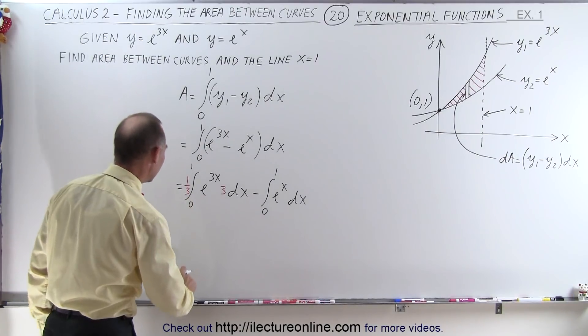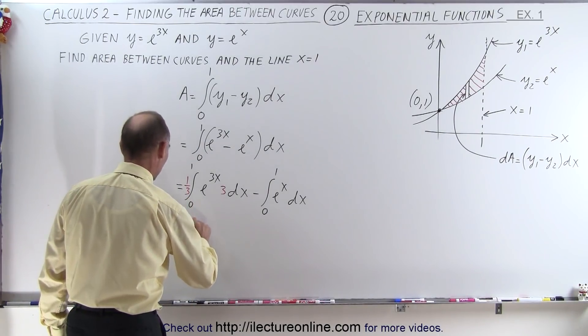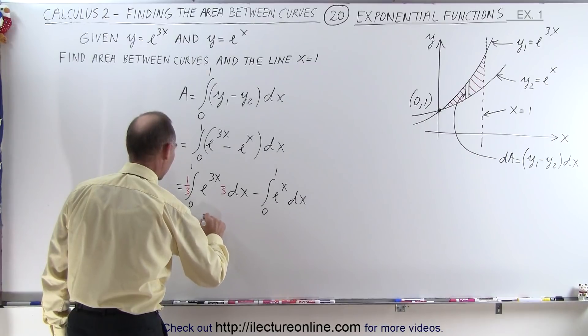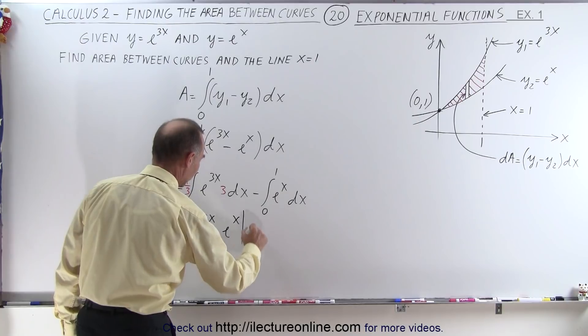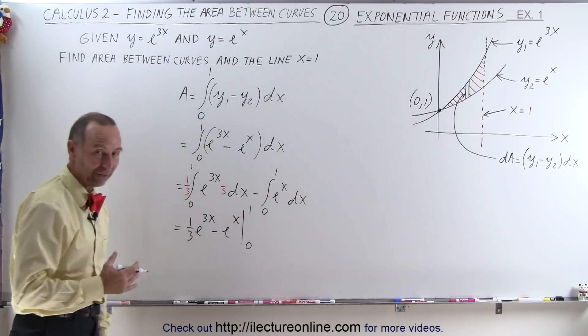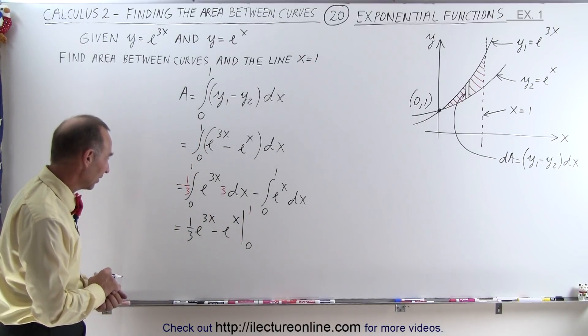So let's go ahead and integrate this now. This becomes equal to 1 third e to the 3x, and then here minus e to the x, and we have to evaluate that from 0 to 1 since both of them have the same integration limits.